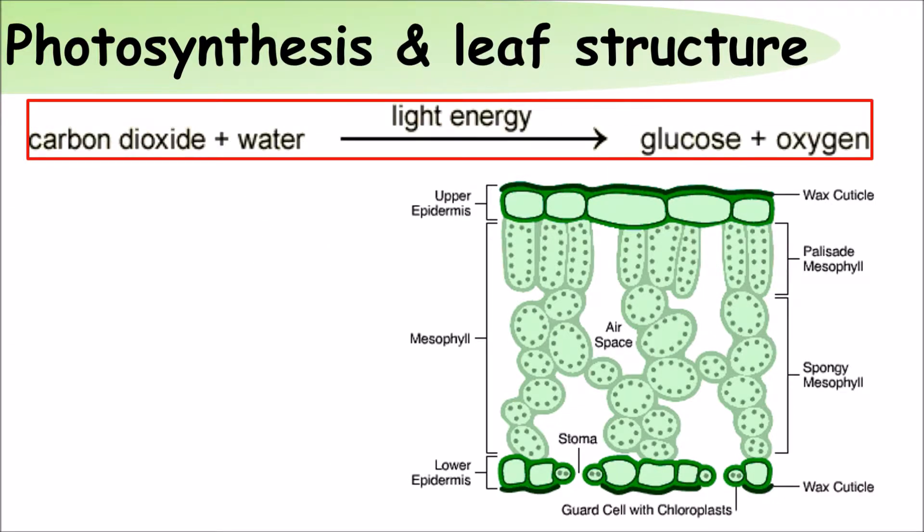The equation for photosynthesis is carbon dioxide plus water goes to form glucose plus oxygen.